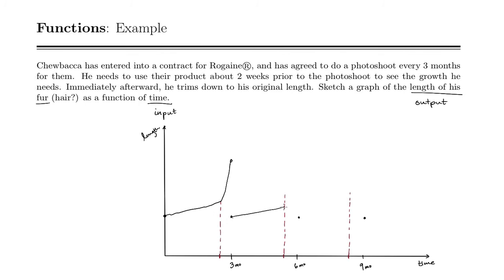So there's a steady growth, just regular growth, and then he takes Rogaine and it shoots off again. Then again — slowly grows, and then he starts taking Rogaine and it takes off again. This cycle repeats over and over and over.